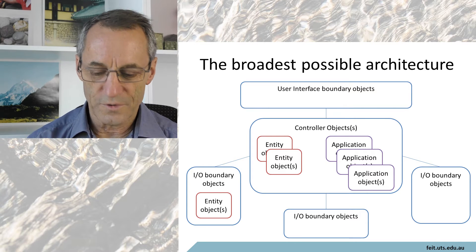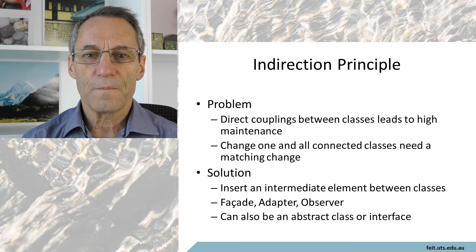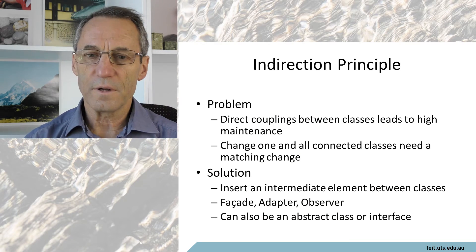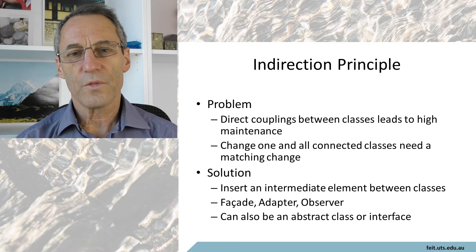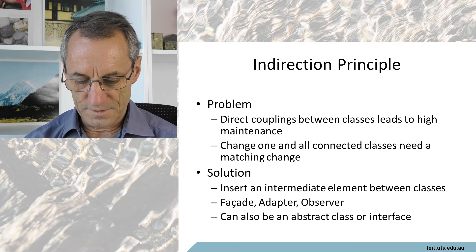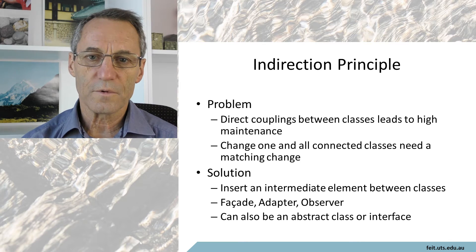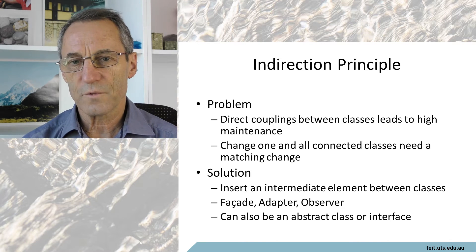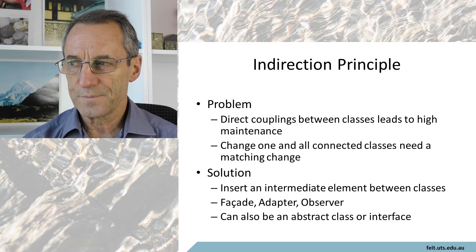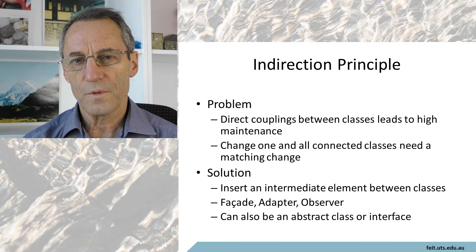The first thing to look at is the principle of indirection: in a system, a direct connection between one class and another is frequently not a good idea. You really ought to go through some insulating artifact - a facade, an adapter, or an observer. Using a facade works pretty well so that you have an independent thing.